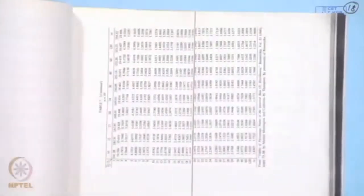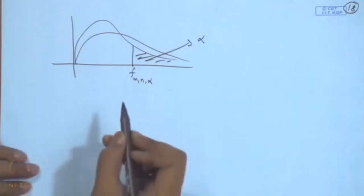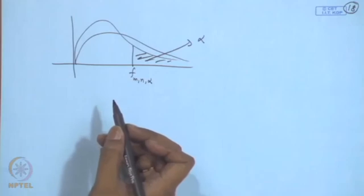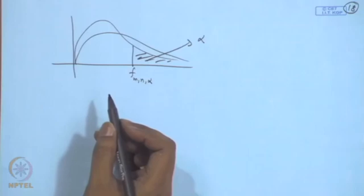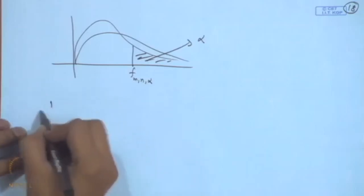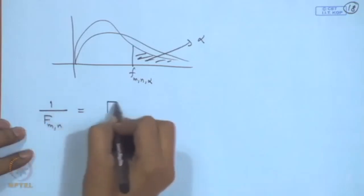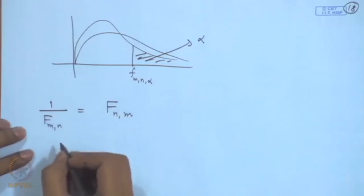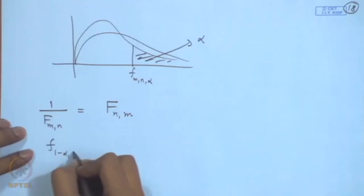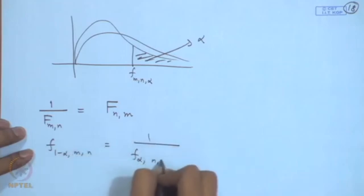These sampling distributions — normal, chi-square, t, and F — are used for inference problems, particularly to find confidence intervals and for testing of hypotheses. In the next lecture, I will be introducing the problem of inference, in particular the problem of point estimation.